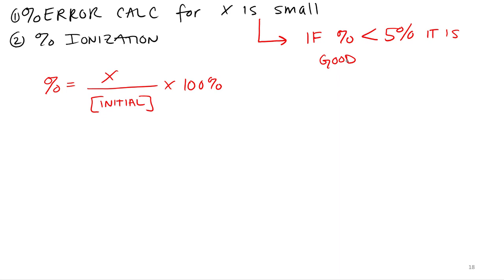If it's greater than 5%, what do you think that means? It's not good, it's bad. So basically that means you can't do the x is small approximation.